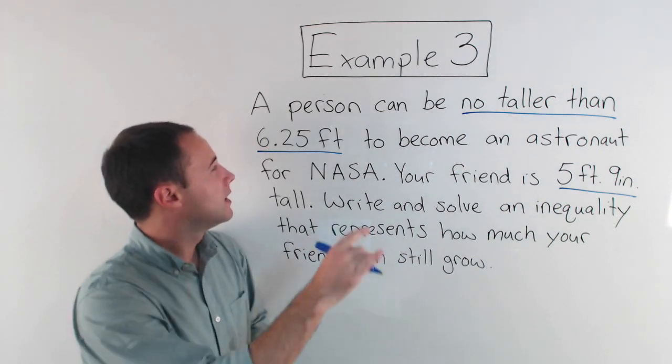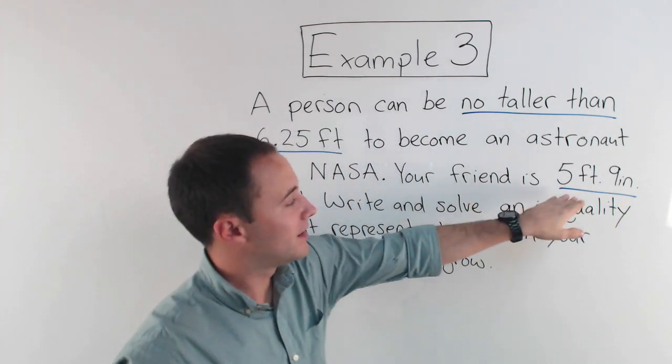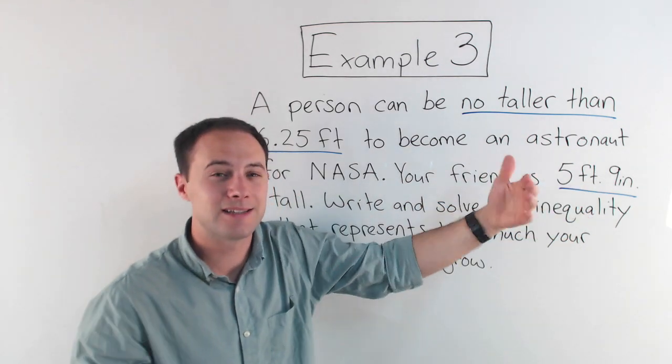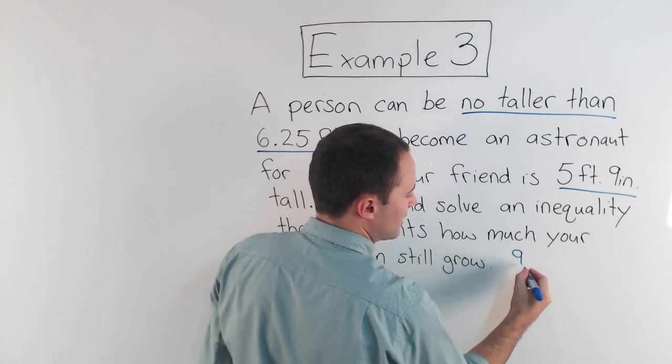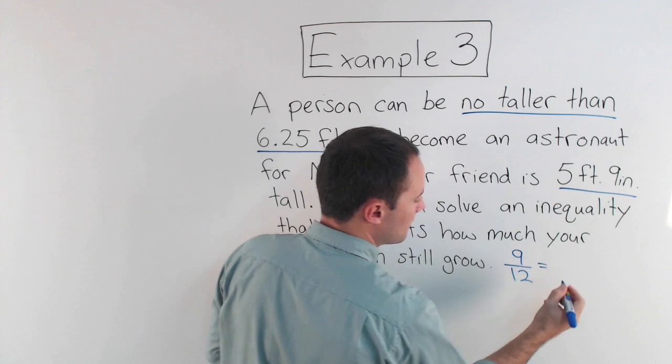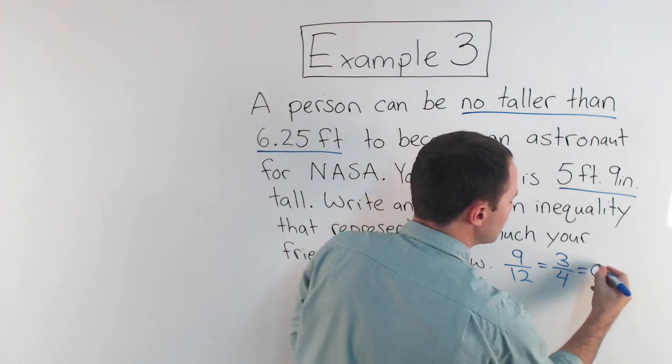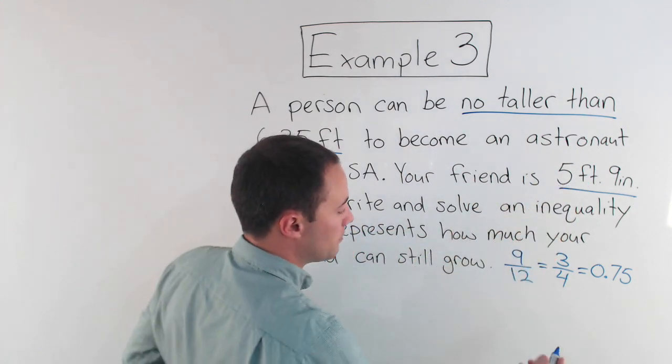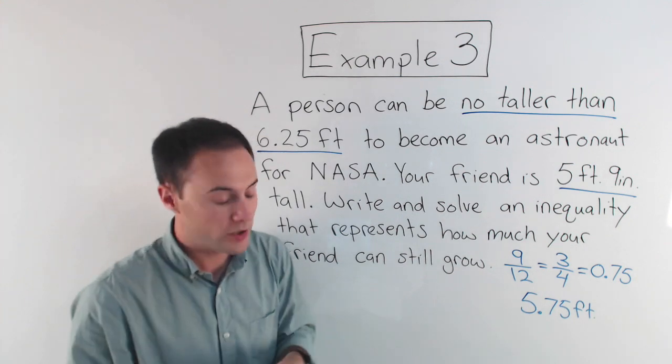First, hopefully you notice we've got 6.25 feet and then we've got 5 feet 9 inches. This is written in just feet with a decimal. This is with feet and inches. So that's a problem right off the bat. I need to make this look like that. So I need 5 feet 9 inches as a decimal in just feet. So the question is, well, 9 inches is how much of a foot? 9 inches is 9 out of 12, right? Because there's 12 inches in a foot. If I simplify that, that's going to be 3 fourths. And 3 fourths as a decimal, hopefully you know that, is 0.75. So that helps. 5 feet 9 inches tall would then be equal to 5.75 feet. Okay, so that's nice. Now we've got two decimals. The units we're using is just feet. Now I need to write and solve my inequality.